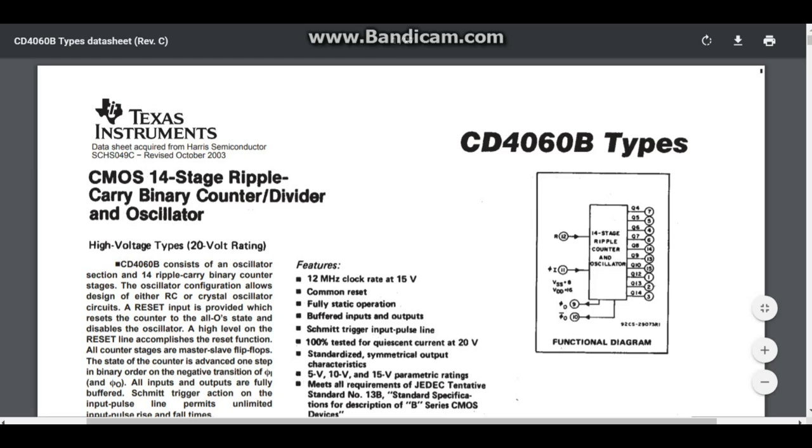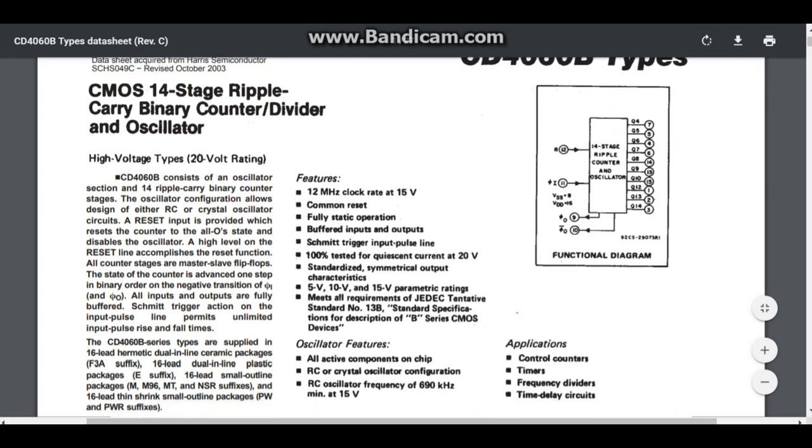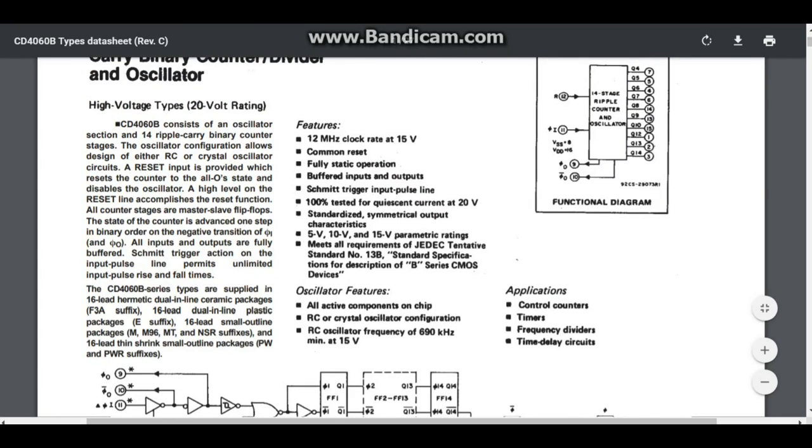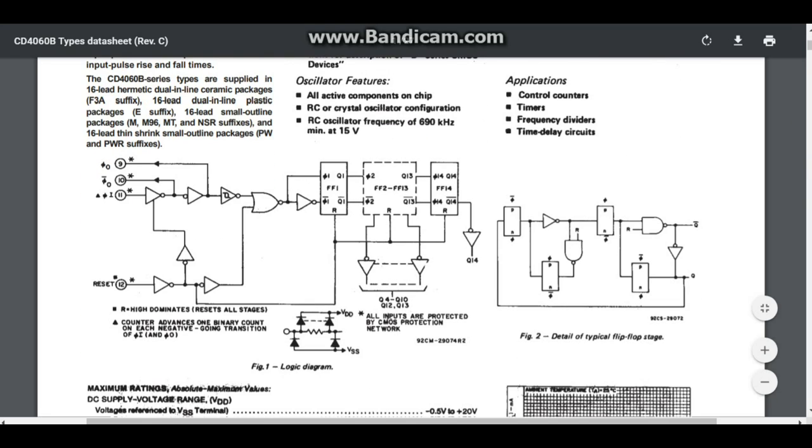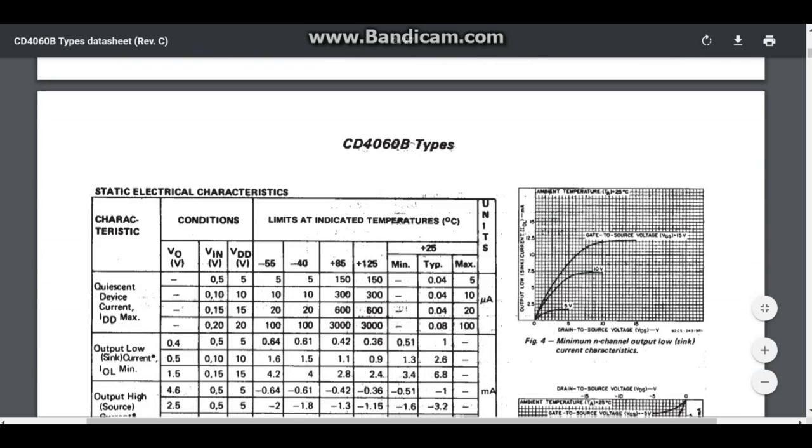Okay, here's the datasheet for that 4060. We'll take a look down through here. There's some of the features you can see: a 12 megahertz clock rated at 15 volts, common reset, buffered inputs, Schmidt trigger input pulse line. There's some applications. There's the internal structure of the chip. There's the maximum ratings.